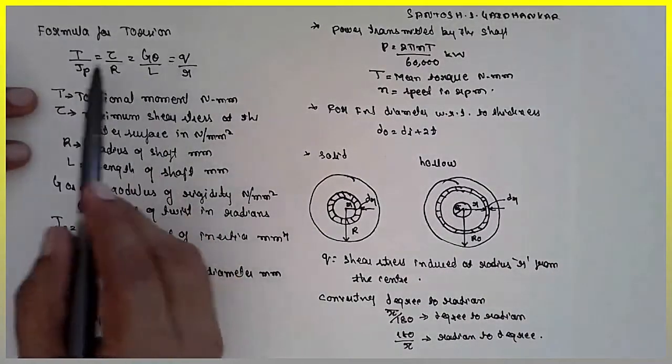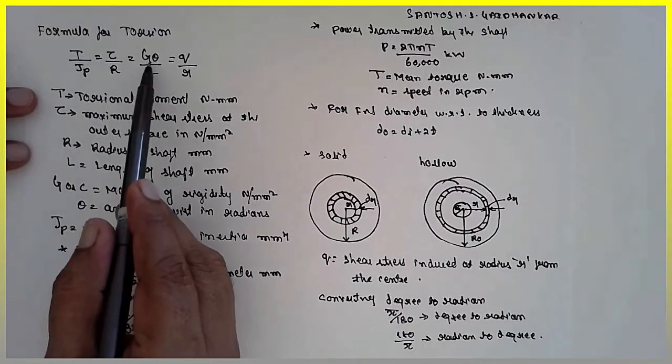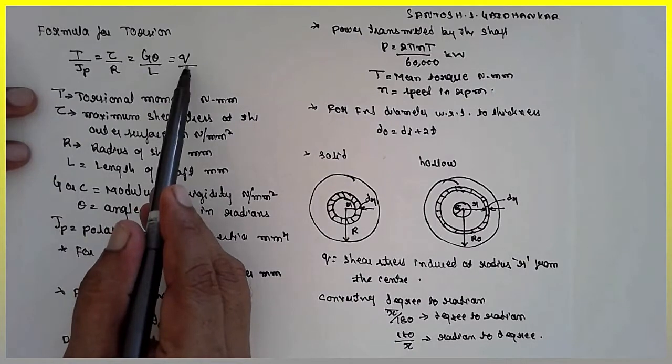The formula for torsion is T divided by JP is equal to tau divided by R is equal to G theta by L, is equal to q by r.